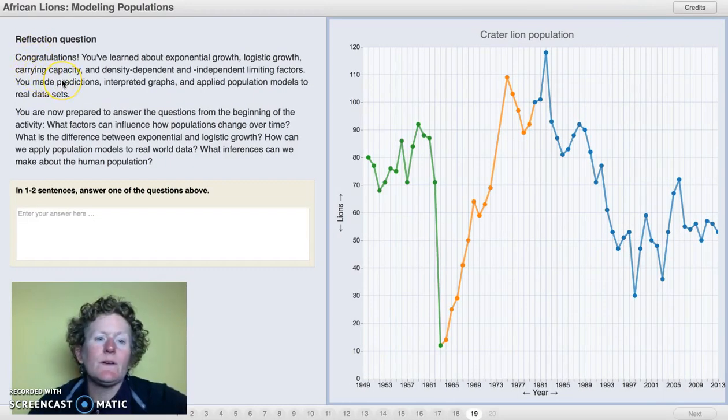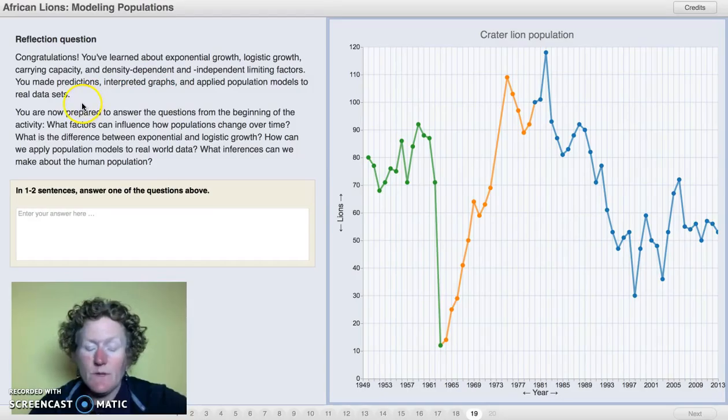Congratulations! You've learned about exponential growth, logistic growth, carrying capacity, and density-dependent limiting factors. You've made predictions, interpreted graphs, and applied population models to real data sets. You're now prepared to answer the questions from the beginning of the activity. Which one did you choose? What factors can influence how populations change over time? What is the difference between exponential and logistic growth? How can we apply population models to real-world data? What inferences can we make about the human population? Take some time, do some thinking, and write your answer.